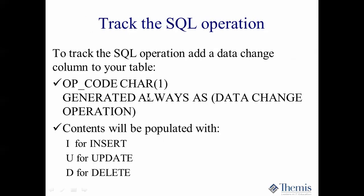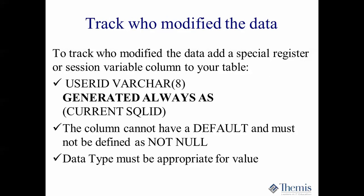That doesn't leave the original row in there if you're doing this on the base. You have to specify another specification to have the delete go into the history. I's and U's will show up even if it's not a system period table. In addition, I wanted to know who performed the operation, whether it's in the base table or the history. So I added a deterministic column — this happens to be the current SQLID special register. I set up a column called userID, VARCHAR(8), generated always as the contents of the special register SQLID whenever the row is processed — inserted, updated, or deleted.